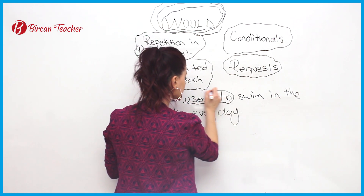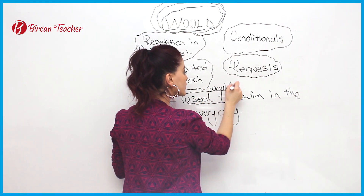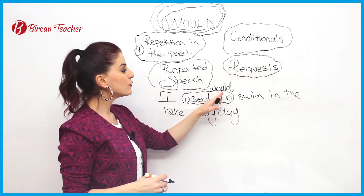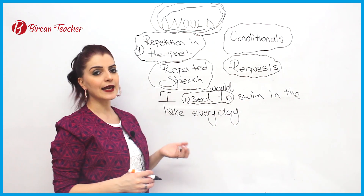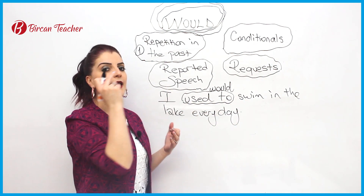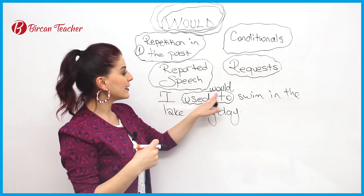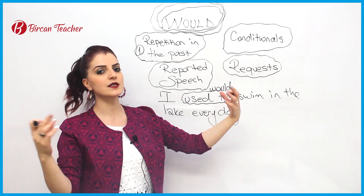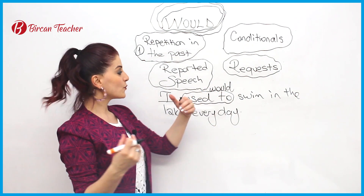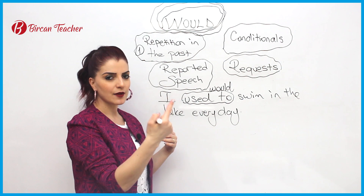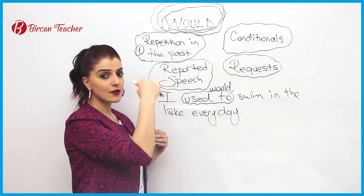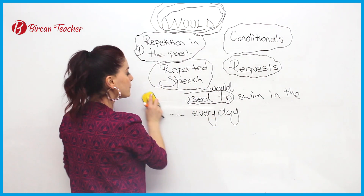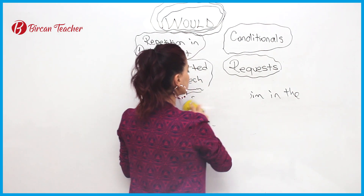It is also possible to use 'would' instead of 'used to.' We can say: I would swim in the lake every day. We understand that in the past you did this action regularly, for some period — maybe years, maybe months, maybe weeks — but not only one time. You did it repeatedly and it is in your past now. So let's move on to conditionals. Maybe in if-clauses you clearly remember Type 2 and Type 3.